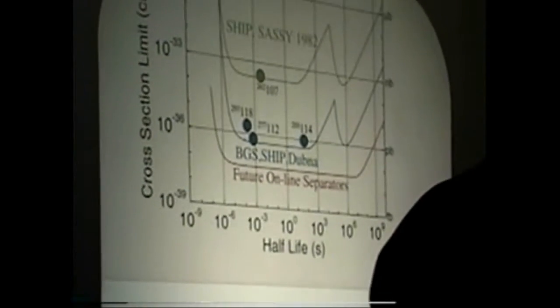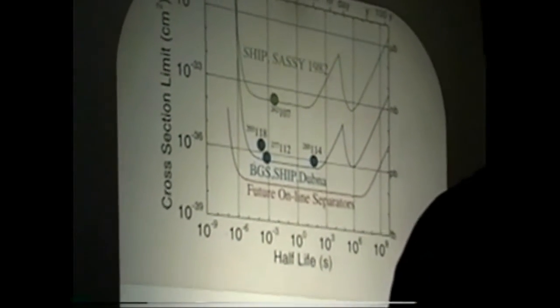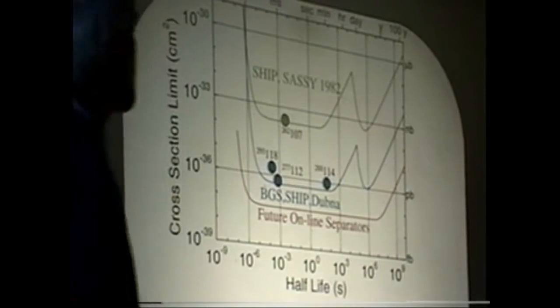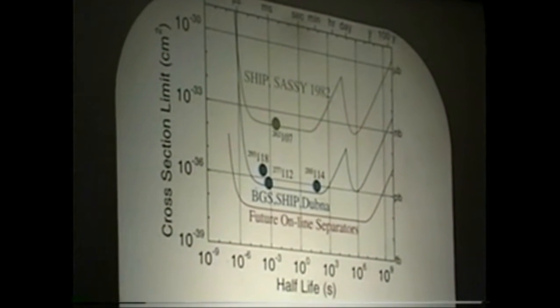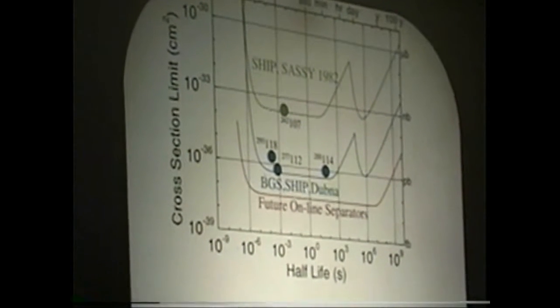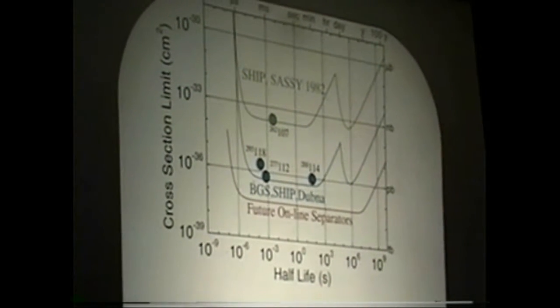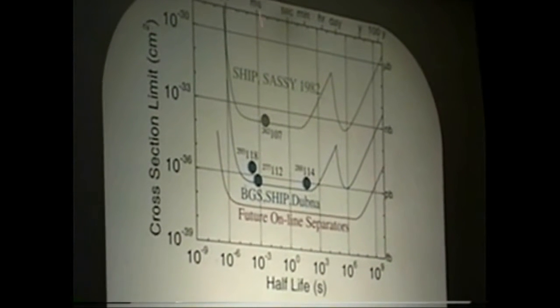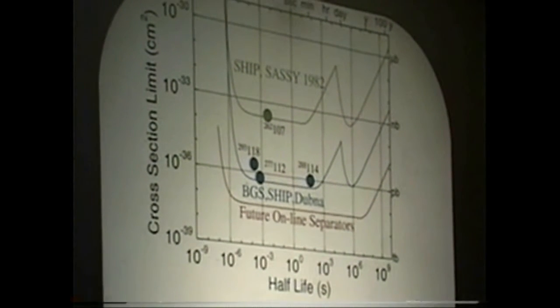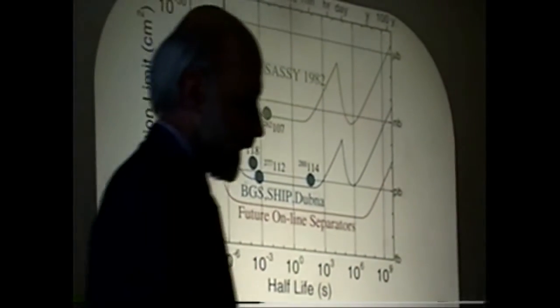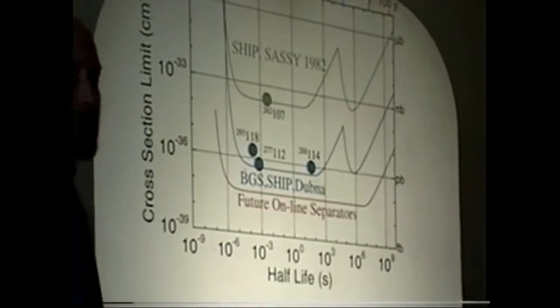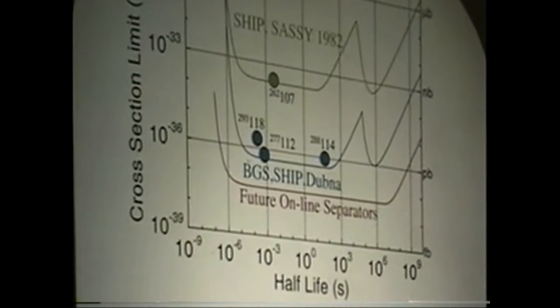It was a little bit disappointing during those super heavy element experiments to have sensitivity only a little bit better than the nanobarn. In today's experiments, the blue line shows the sensitivity from the Berkeley gas field separator, the ship velocity filter at GSI, and also the gas field separator in Dubna. You see two or three orders of magnitude increase to this part of the curve. Much of that is due to higher beam intensities and better efficiencies in the separators.